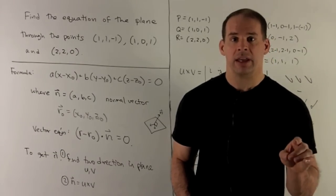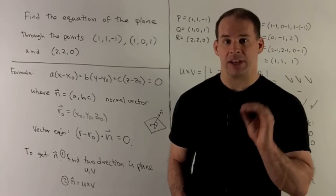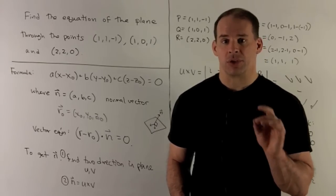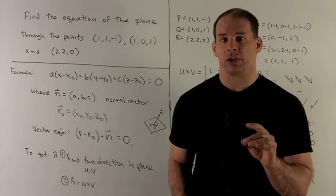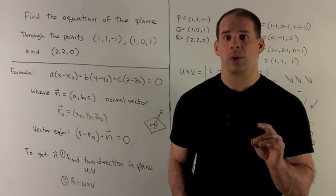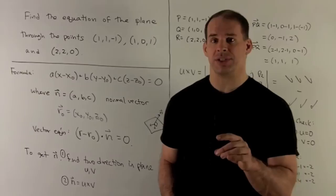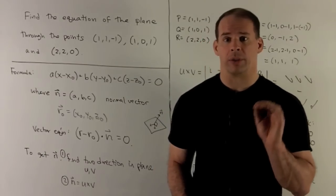Here, N = (A, B, C) is going to be any normal vector, so it's going to be any vector that's perpendicular to our plane. And R₀ = (X₀, Y₀, Z₀) will be any point on the plane.